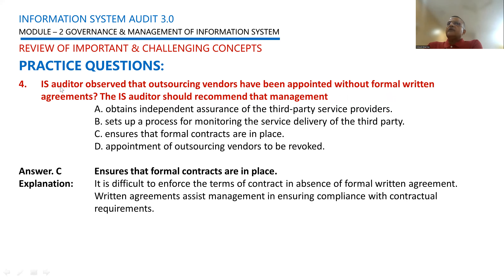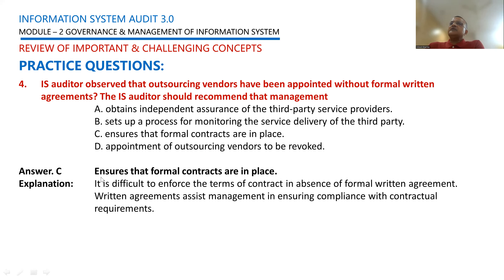Fourth question: an IS auditor observed that the outsourcing vendor has been appointed without a formal written agreement. The IS auditor should recommend that management ensures formal contracts are in place. Without a formal contract, the vendor may back out and there is no commitment of performance. Therefore, option C — ensure that formal contracts are in place — is correct.